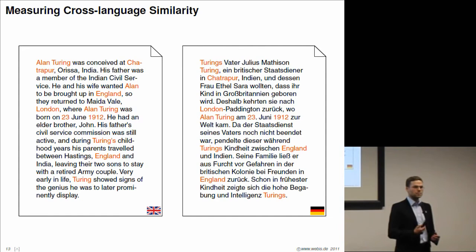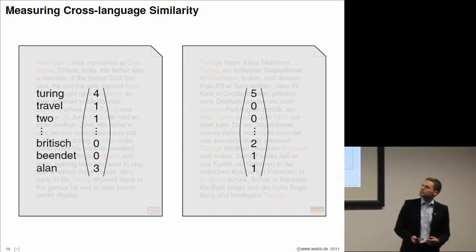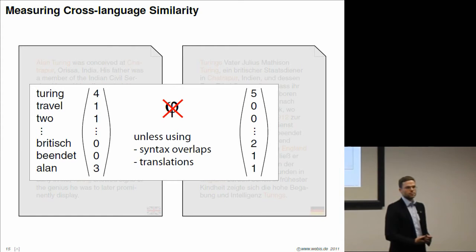If we again compute these vectors and try to compute the similarities, we will notice that the similarity values we will get are much less usable, much less reliable in practice, because we cannot rely on named entities appearing between two texts of different languages. Actually, we rely on syntactic overlap. If we have a Chinese document on the right, there would be no syntactic overlap whatsoever.